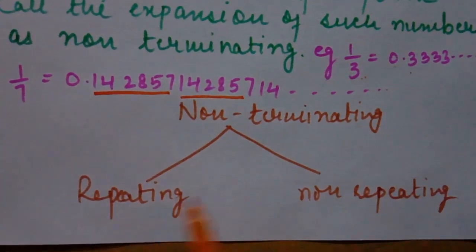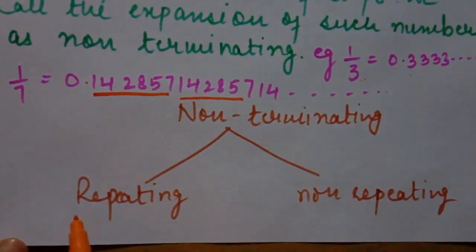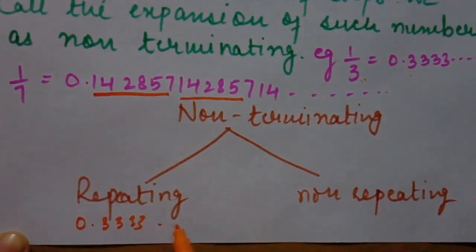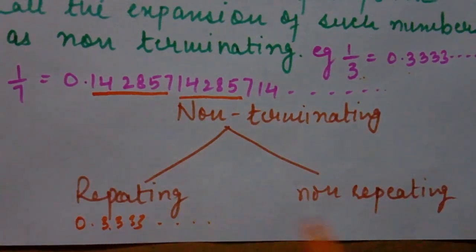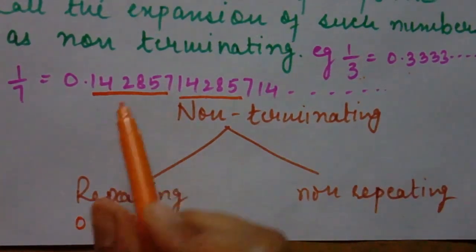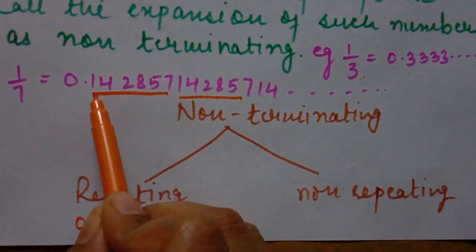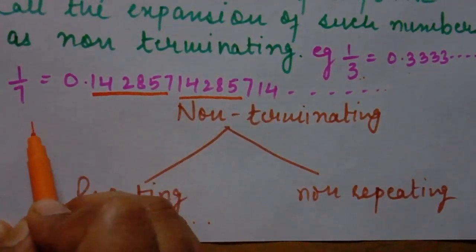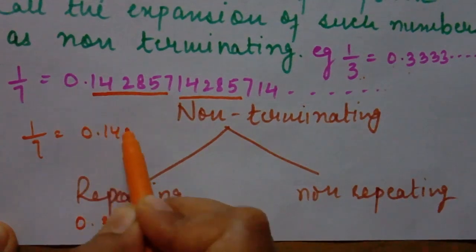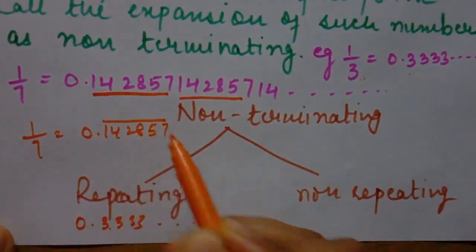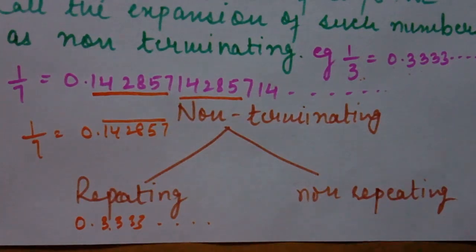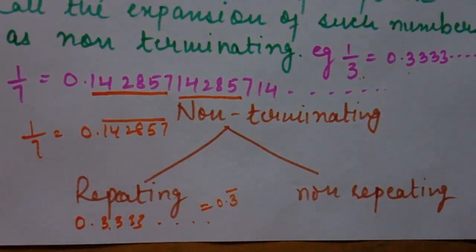Non-terminating terms are of two types: one with a repeating pattern, and one with a non-repeating pattern. For 0.3333..., we call it non-terminating repeating. For 0.142857142857..., this is also non-terminating repeating. We can write it with a bar: 0.3̄ or 0.142857̄ — the bar means that block of digits repeats again and again.